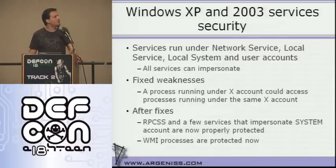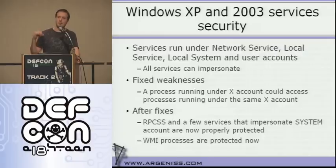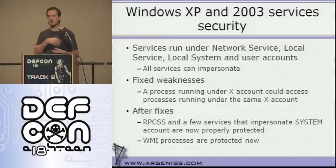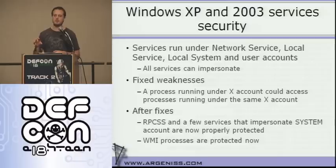On Windows XP and 2003, the services run under Network Service, Local Service, Local System, or user accounts, and all services on these Windows versions can impersonate. There was a weakness I found in my previous research: if there were two processes running under the same account, they could access each other, get an impersonation token from the other process, and elevate privileges. What Microsoft did was add a protection to special processes to avoid them accessing each other to get tokens and elevate privileges — mostly protecting processes that impersonate the system account, such as the service running RPC and Windows Management Instrumentation processes.